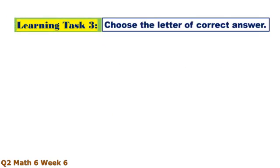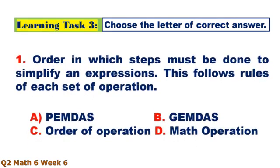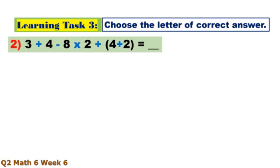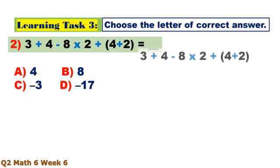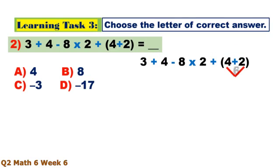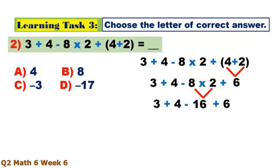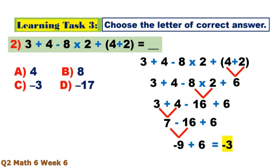Learning Task 3 — Choose the letter of the correct answer. Number 1: the order in which steps must be done to simplify an expression, following rules of each set of operation. Number 2: parenthesis first — 4 plus 2 equals 6. Then multiplication: 8 times 2 equals 16. Then addition: 3 plus 4 equals 7. Then 7 minus 16 equals negative 9, plus 6 equals negative 3.